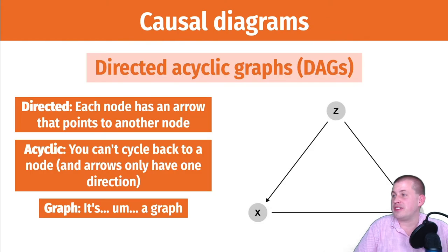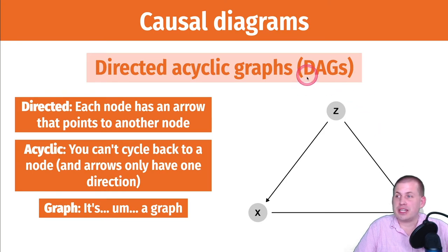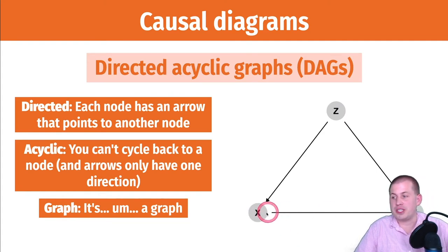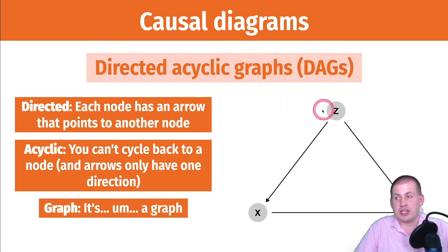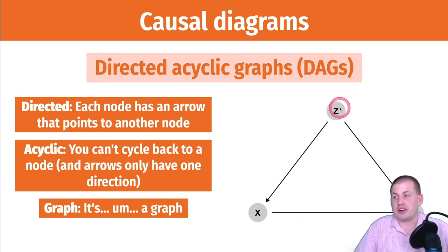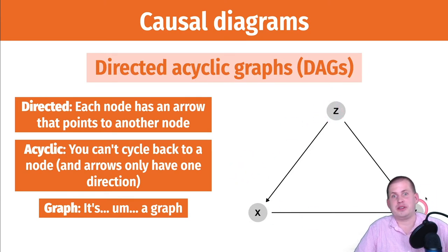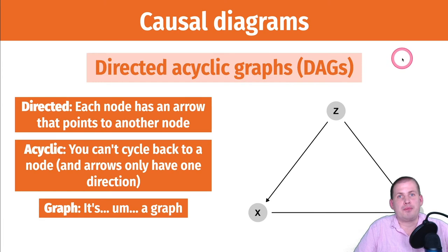The main concept and foundation of the Causal Revolution is the idea of a causal diagram, which has a specific definition: it's a directed acyclic graph, or DAG. We'll talk about DAGs for the rest of the semester. Each letter in the acronym means something. Directed means you have nodes with arrows indicating causal relationships — X causes Y means there's an arrow from X to Y. Acyclic means you can't cycle back: if Z causes X which causes Y, you can't also have Y causing Z, because that creates a cycle.